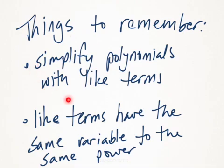Things to remember. You're simplifying polynomials with like terms. And like terms have the same variables to the same power. So x² and x, although they are the same variable, they are not to the same power. So I would not combine those terms because they are not like terms.